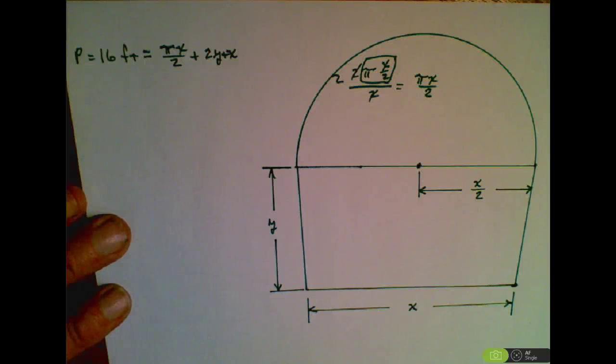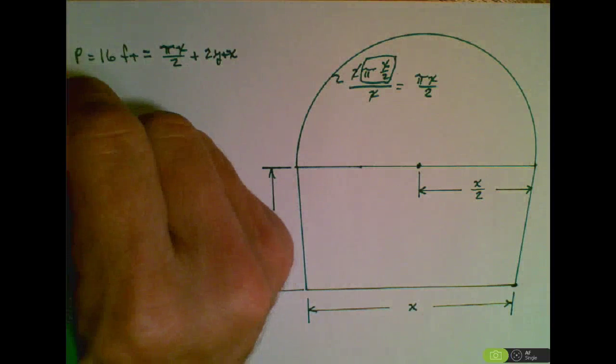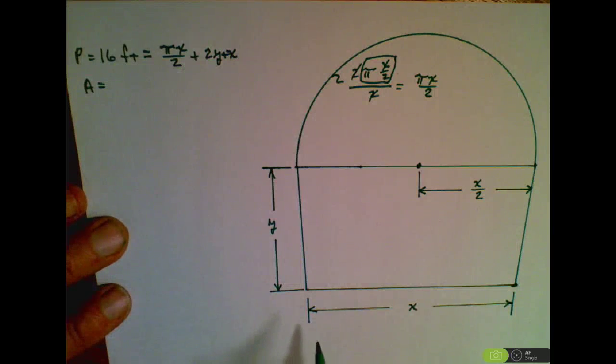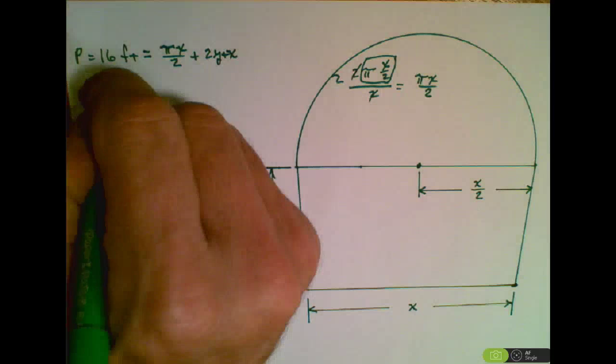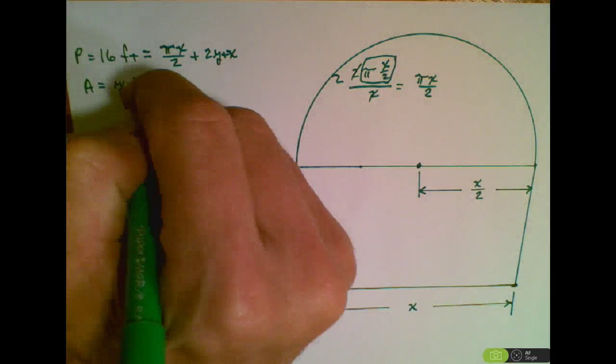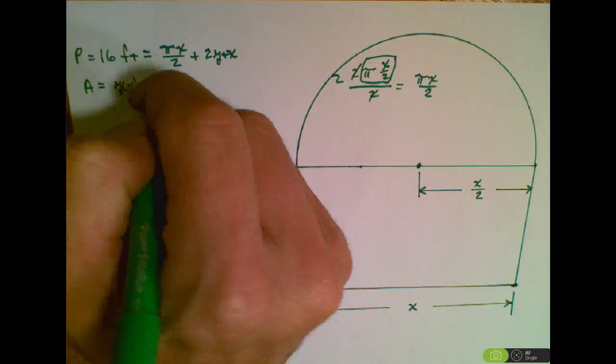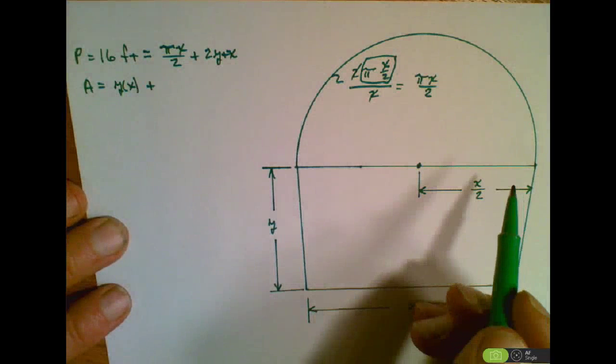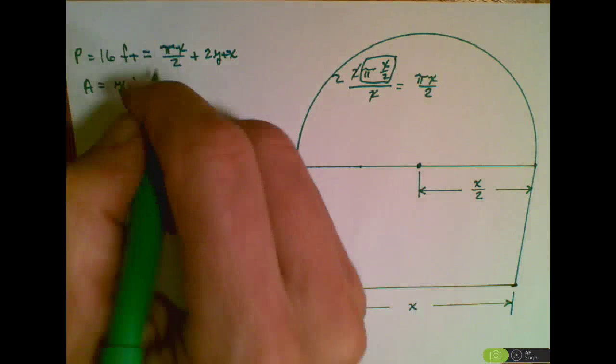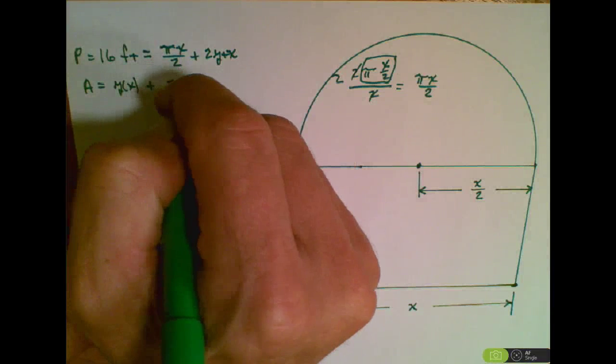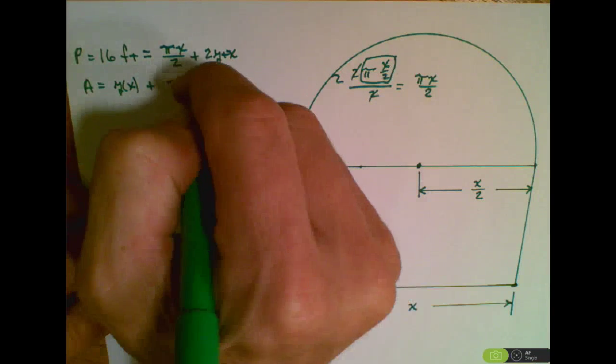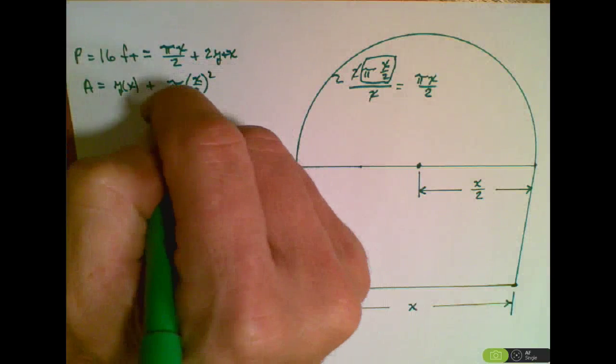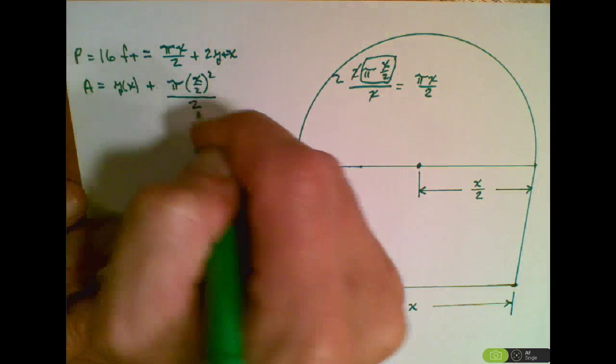Now the other equation we're going to have is area. The area of this figure, the rectangular part is easy, that's y times x. Then we're going to add the area of the semicircle, which would be πr² all over 2. So we're going to have π times (x/2) squared, and since we have a semicircle, we're going to have the 2 in the denominator.